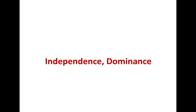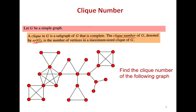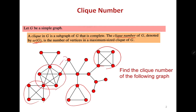Good morning everyone. Today we are going to discuss independence number as well as domination number. We start with the clique number. For a simple graph G, a clique is a subgraph that is complete — any complete subgraph is a clique — and we are looking for the clique of maximum size, denoted as the clique number ω(G). Considering an example with K3, K4, K5, we find that K5 is the maximum-size clique, so ω(G) = 5.